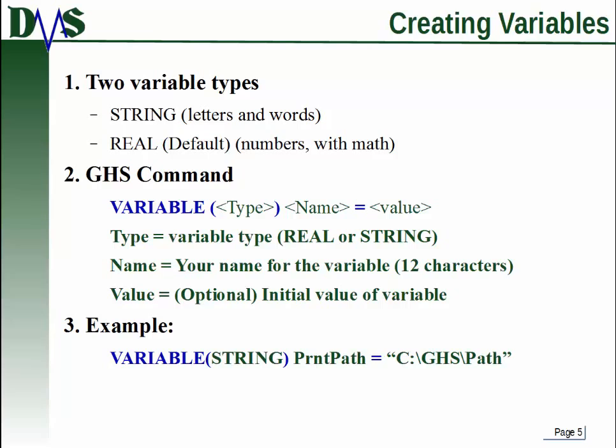The first type is a string variable. That's just straight letters and words. So you type something as a string, GHS thinks it's a pure set of characters. Now the other type is a real variable. This is also the default type that GHS will use when you just simply create a variable without specifying the type.